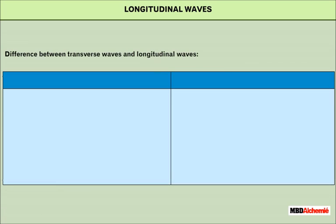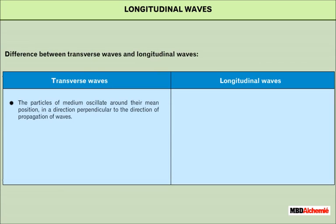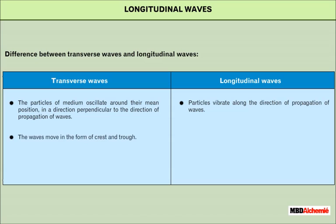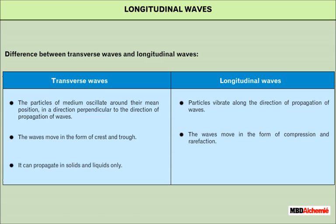This table gives the difference between transverse and longitudinal waves. In transverse waves, the particles of the medium oscillate around their mean position in a direction perpendicular to the direction of propagation of waves. In longitudinal waves, particles vibrate along the direction of propagation of waves. Transverse waves move in the form of crests and troughs, while longitudinal waves move in the form of compression and rarefaction. Transverse waves can propagate in solids and liquids only, while longitudinal waves can propagate in solids, liquids, and gases.